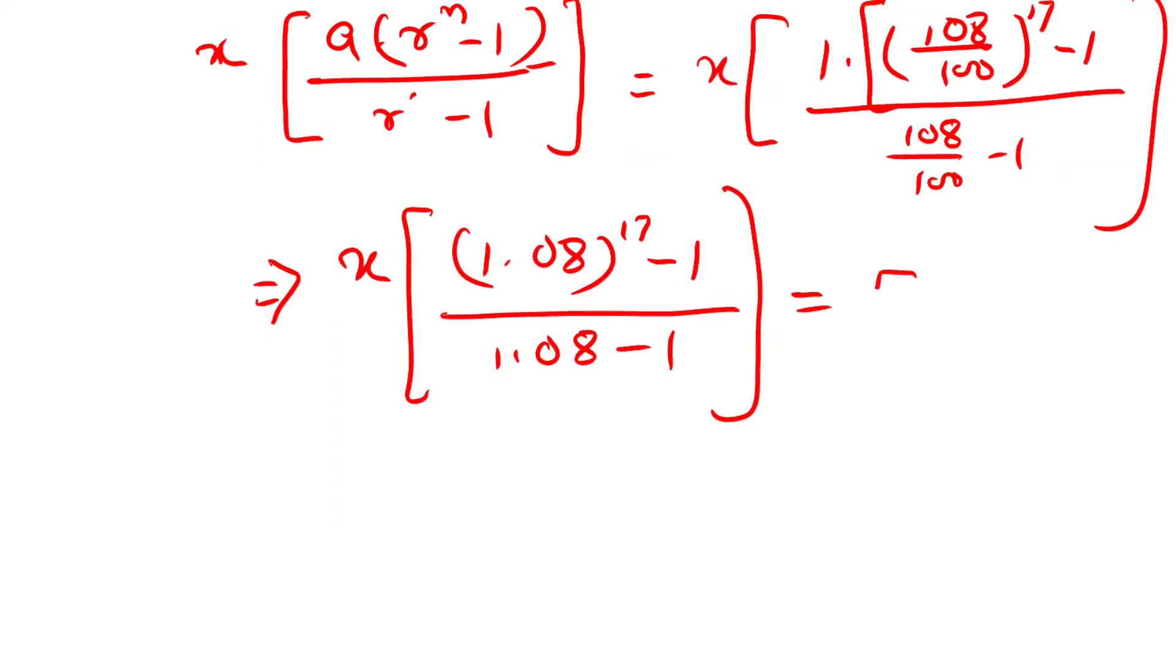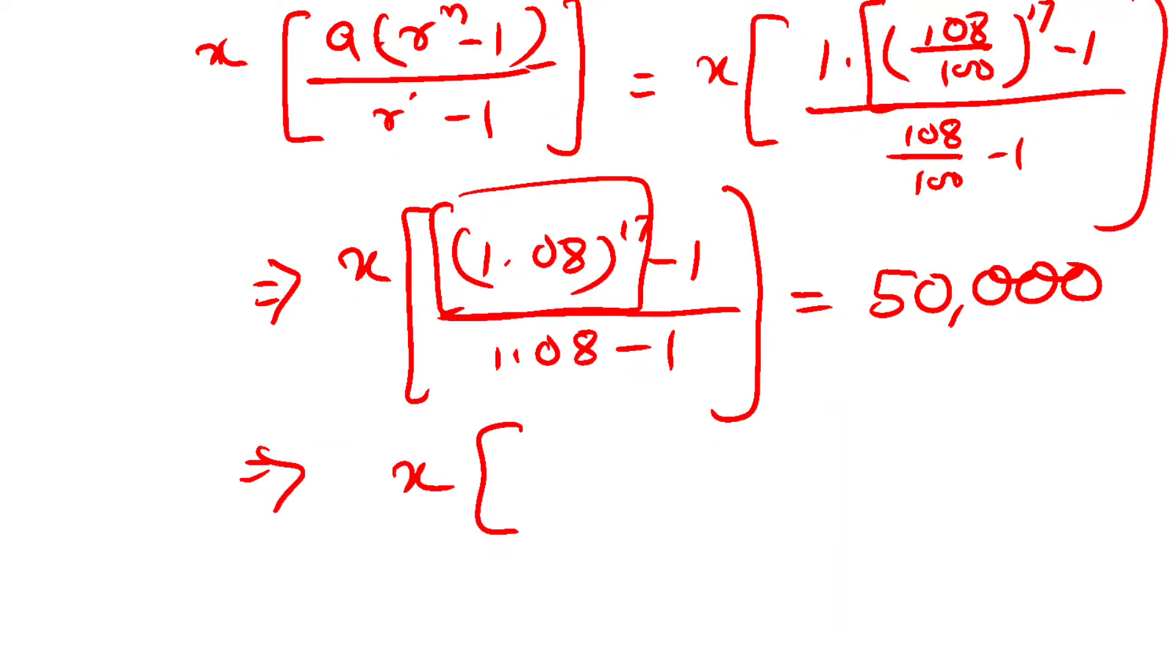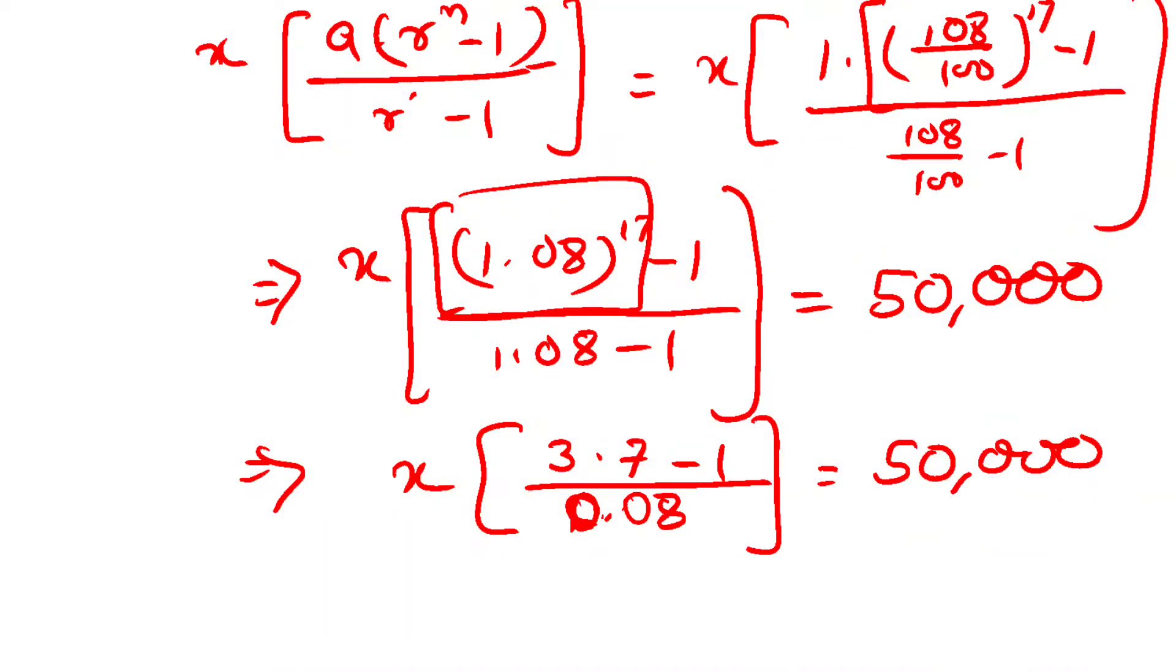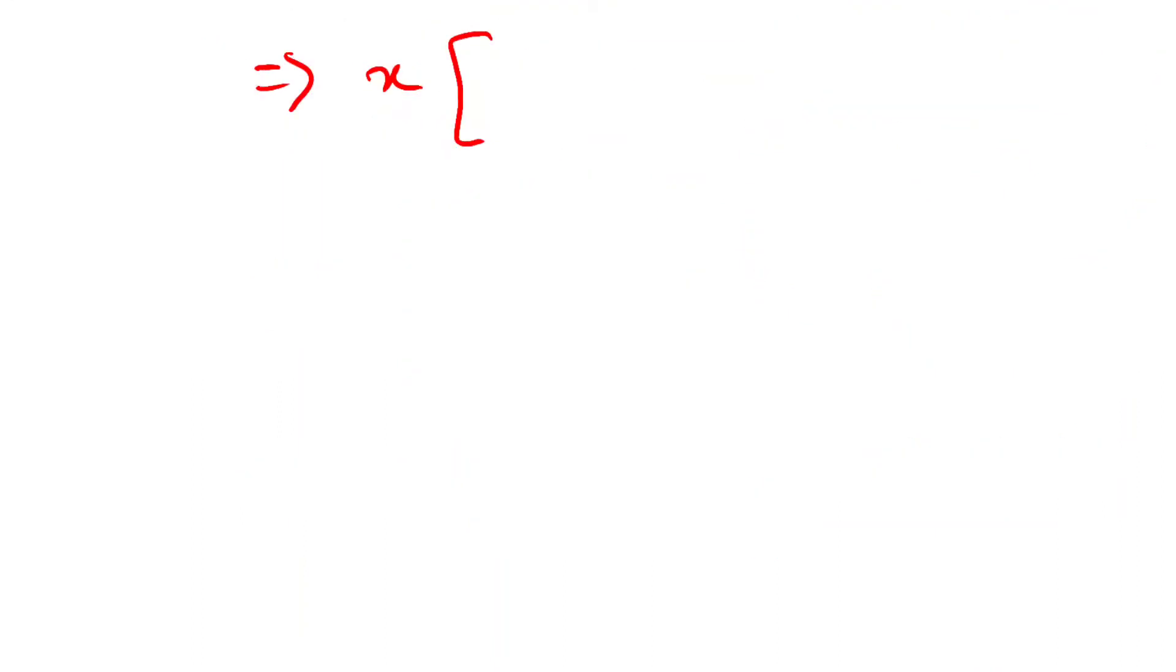Then we have to solve this expression. Using a calculator, 1.08 to the power 17 gives us 3.7 minus 1, which is 2.7, upon 0.08. This gives us 50,000 times 0.08 upon 2.7.